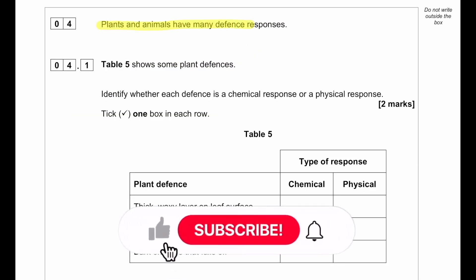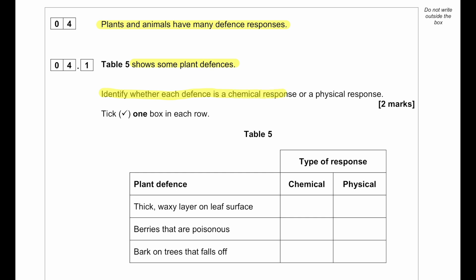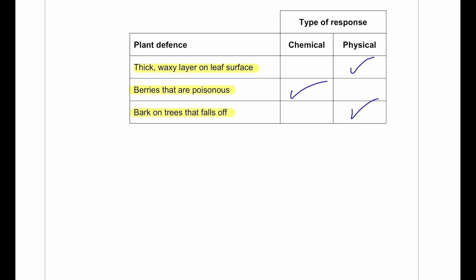Plants and animals have many defence responses. Table 5 shows some plant defences. A thick waxy layer on the surface is a physical response — it acts as a physical barrier. Berries that are poisonous — this is a chemical response. Bark on a tree that falls off — this is a physical response. Any idea that physically prevents an animal from damaging the plant is physical; any chemical that deters animals is chemical.